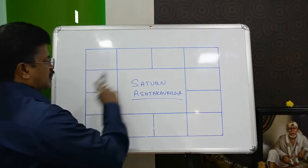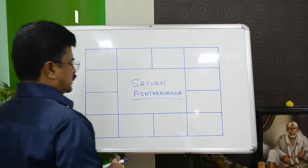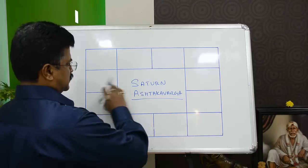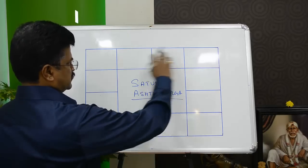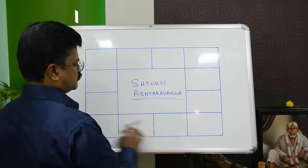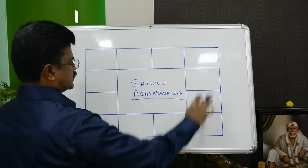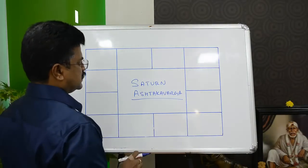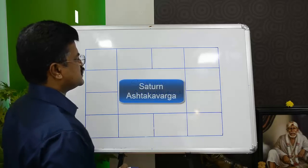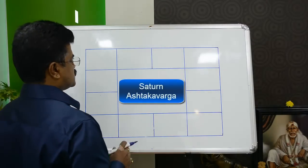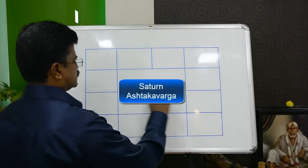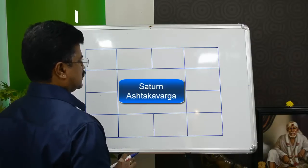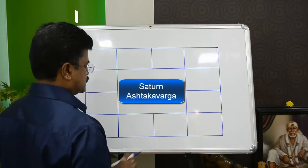In one of the Ashtaka Varga charts, which is called the number chart, you will find Saturn's Ashtaka Varga with single digit numbers. The least number possible is 0 and the maximum possible for Saturn's Ashtaka Varga is always 7. It can never be 8.